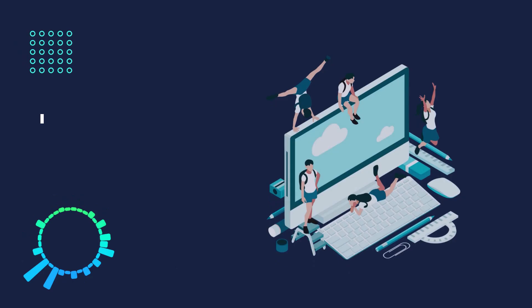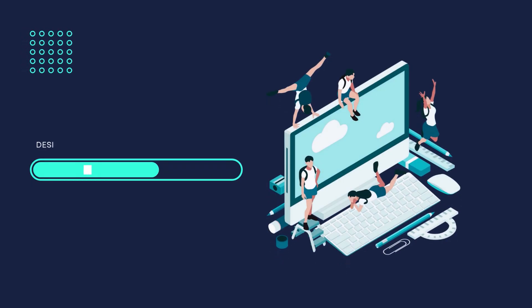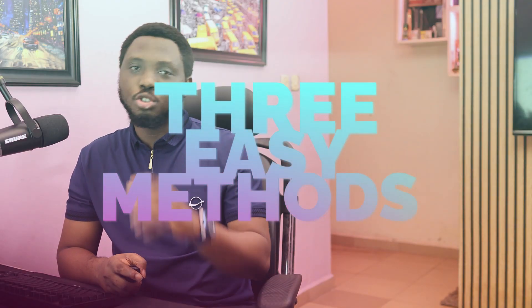There are two important stages to web creation. The first stage is the design stage and the second one is the development stage. These two stages need to align for you to have a pixel-perfect website. If you're very good at designing with Photoshop, then you are halfway down the creation process. You may even have a PSD file just because you saw a template online and you love it. Either way, let me walk you through three easy methods to turn those Photoshop files into a WordPress website.